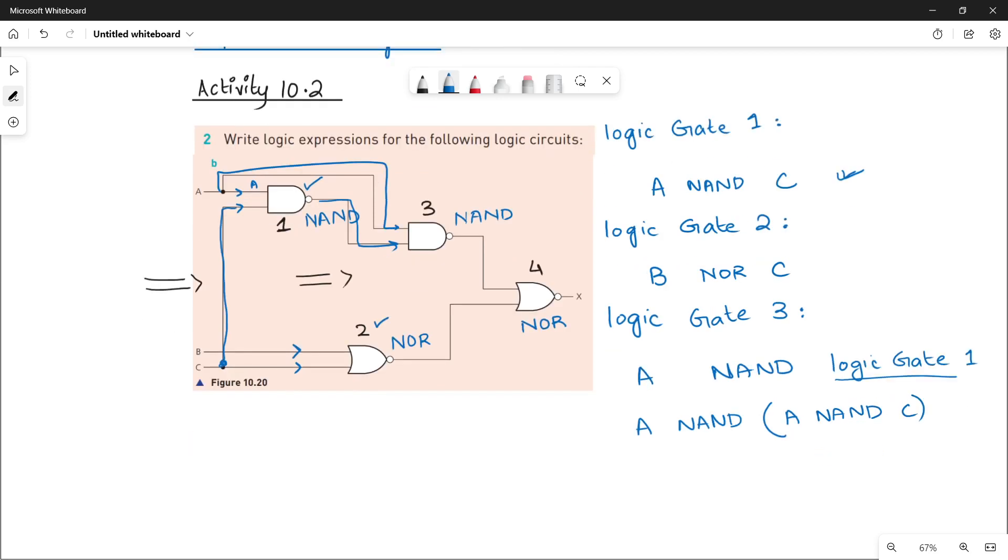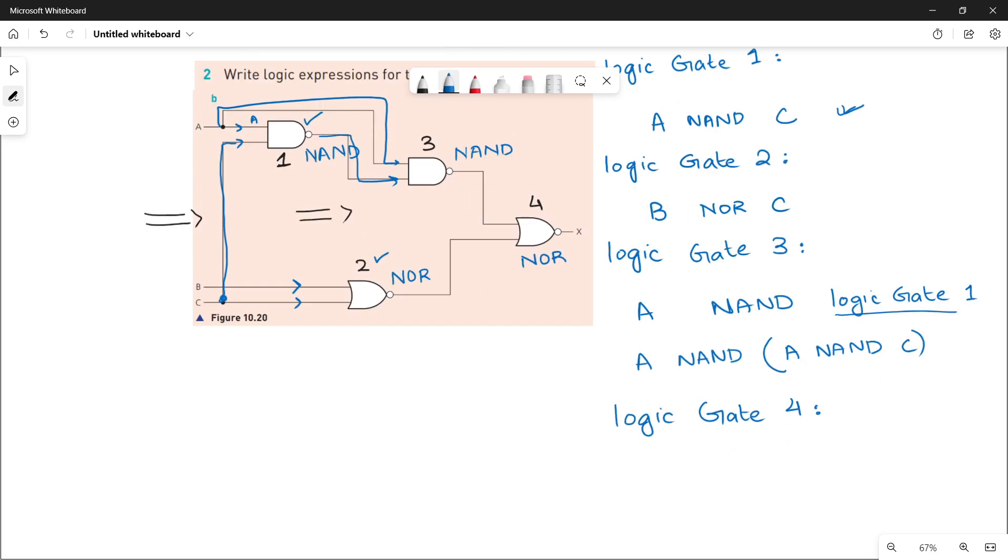So now finally, we have the fourth logic gate, that is a NOR gate. It is giving you the final output. The gate is NOR gate and the inputs will be written here and here. Input one is coming from logic gate three, and input two is coming from logic gate two.